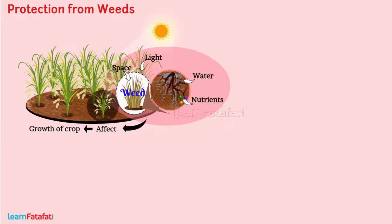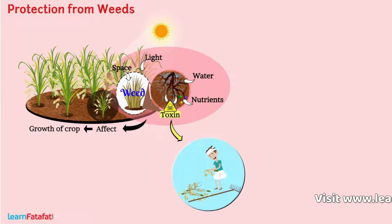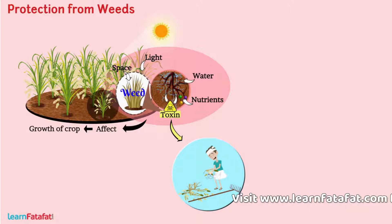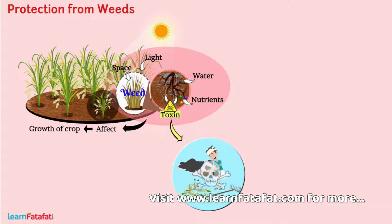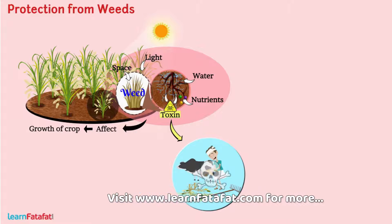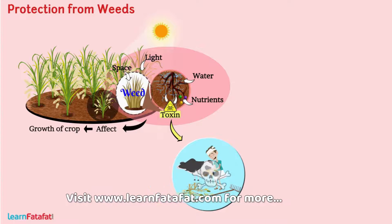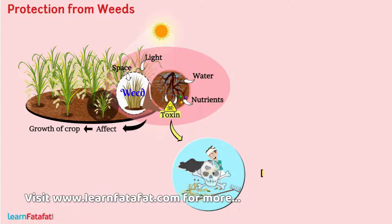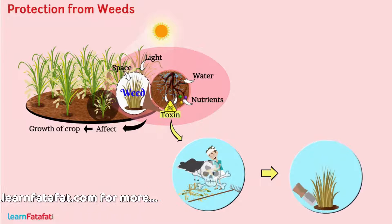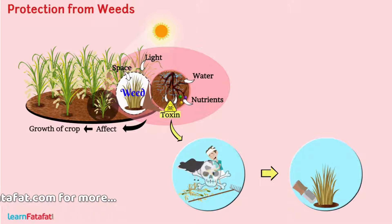In addition to this, some weeds also release toxins which may damage the crop plant and are hazardous to animals and human beings. Therefore, weeds must be removed from croplands.